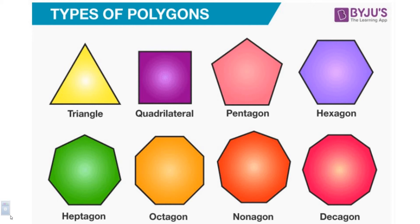A polygon is a closed figure made up of segments, and those segments come together at a vertex. When you have more than one vertex, they're called vertices. Polygons are classified by the number of sides. On the top left you see a triangle — because it has three sides it's called a triangle, and it also has three angles, which is actually why it's called a triangle. Quadrilateral has four sides, pentagon five, hexagon six, and so on.